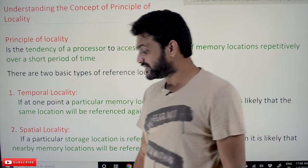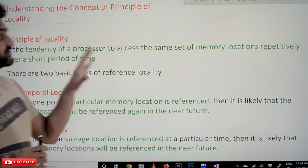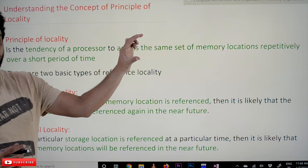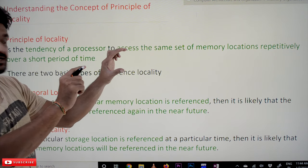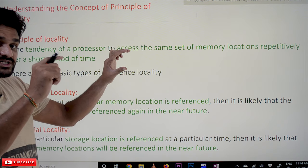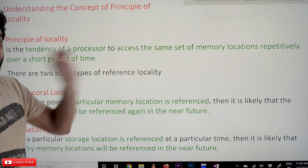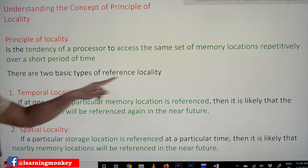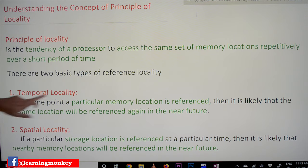There are two different types of principles of locality. One is temporal locality and the other one is spatial locality. As the definition states, within a period of time it generally happens with the processor that within that particular time the same set of memory locations are accessed repetitively. So there are two types: temporal locality and spatial locality.